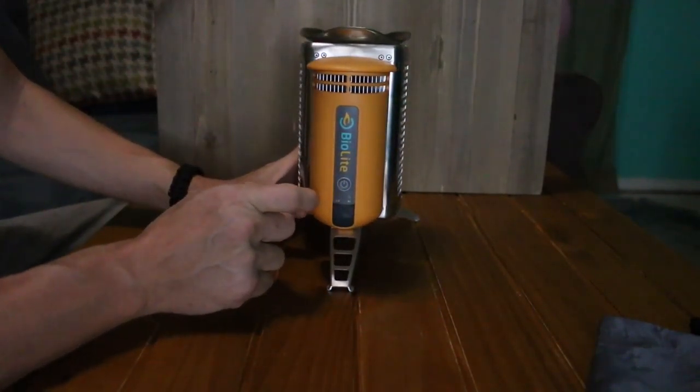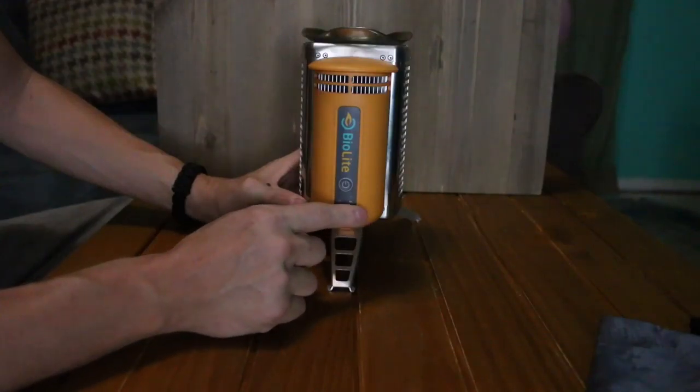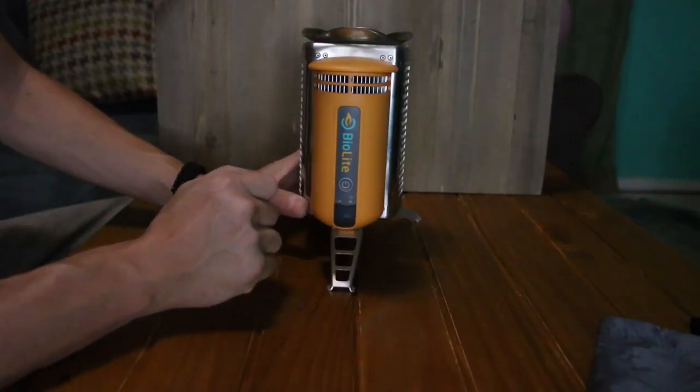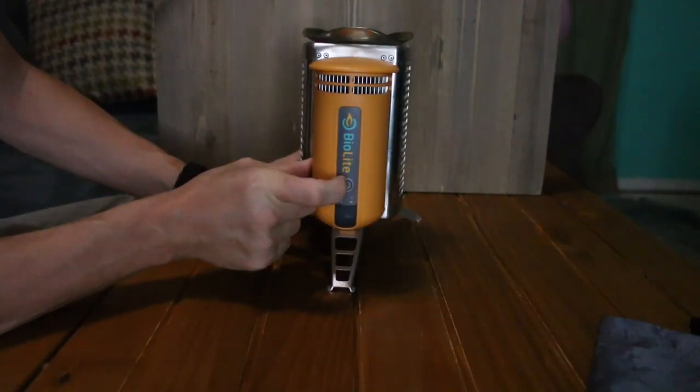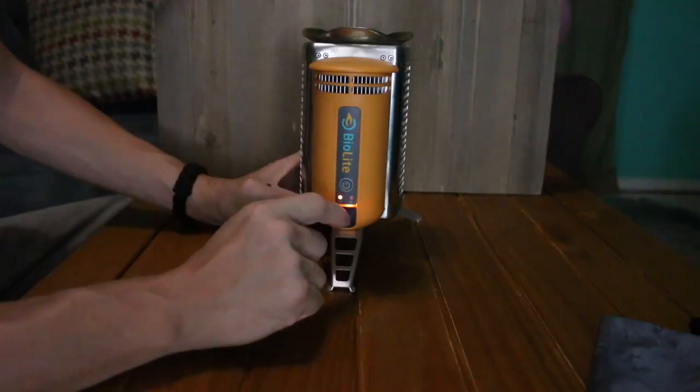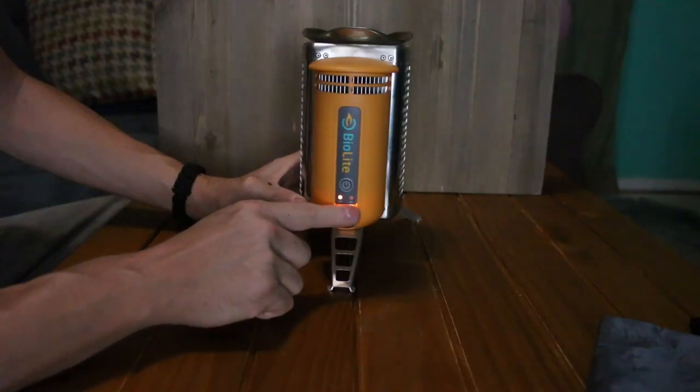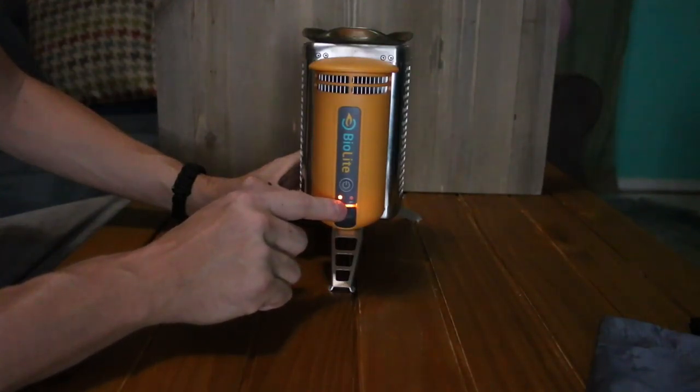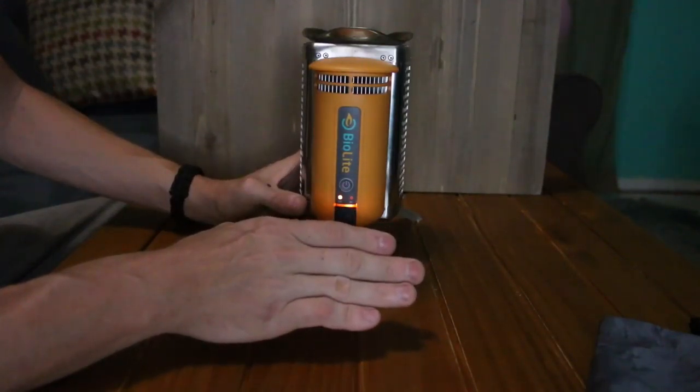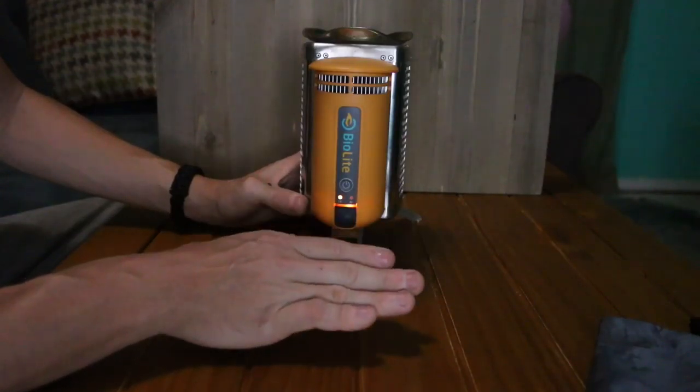Now that fan, it has two settings. It has a low and it has a high. Now when you turn the fan on, see that little light down at the bottom? That yellow, yellowish orange light. Now what that's doing is saying, hey, I'm being used, but I can't make electricity yet.